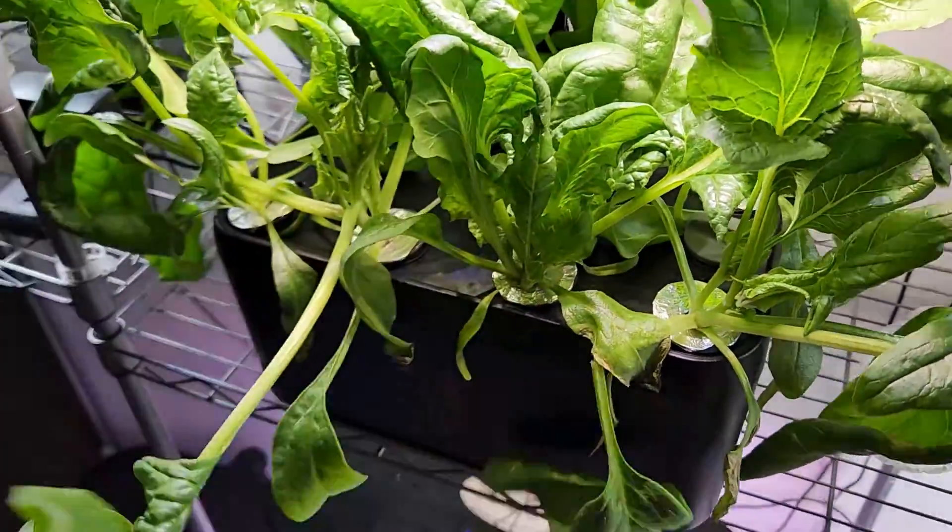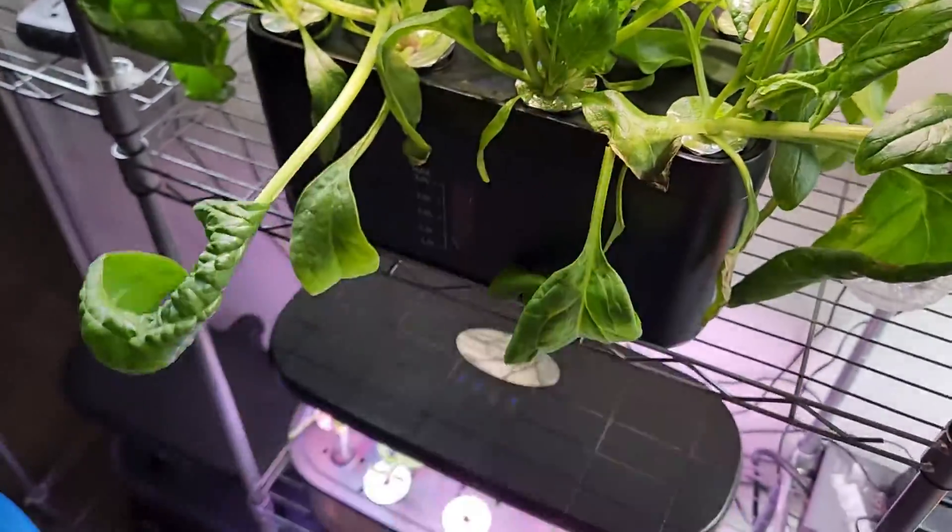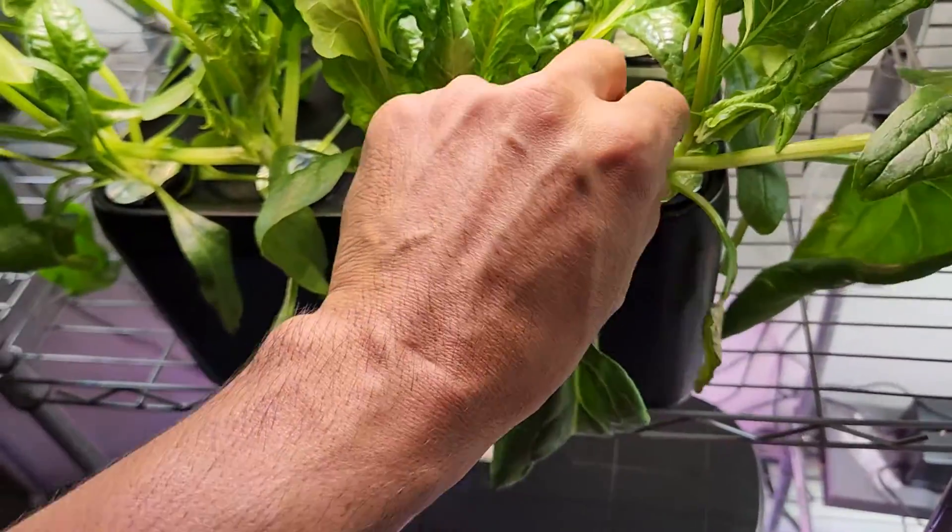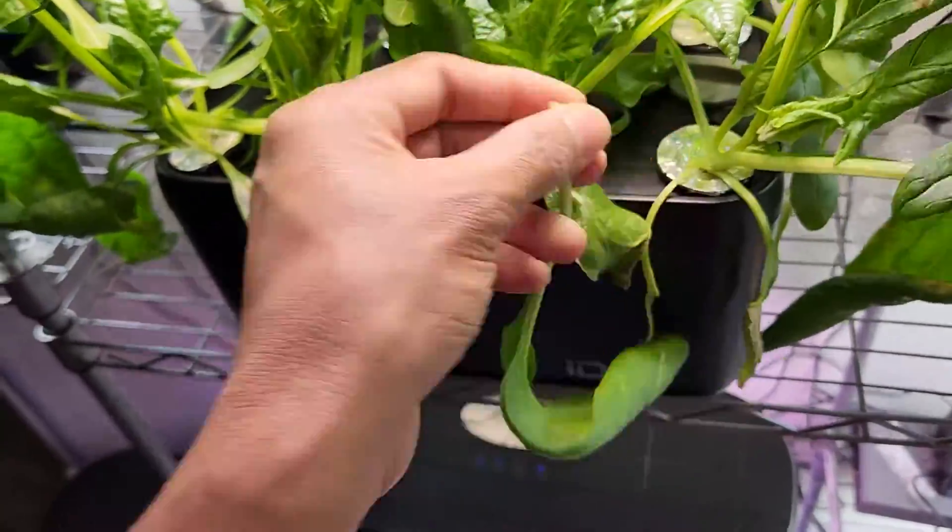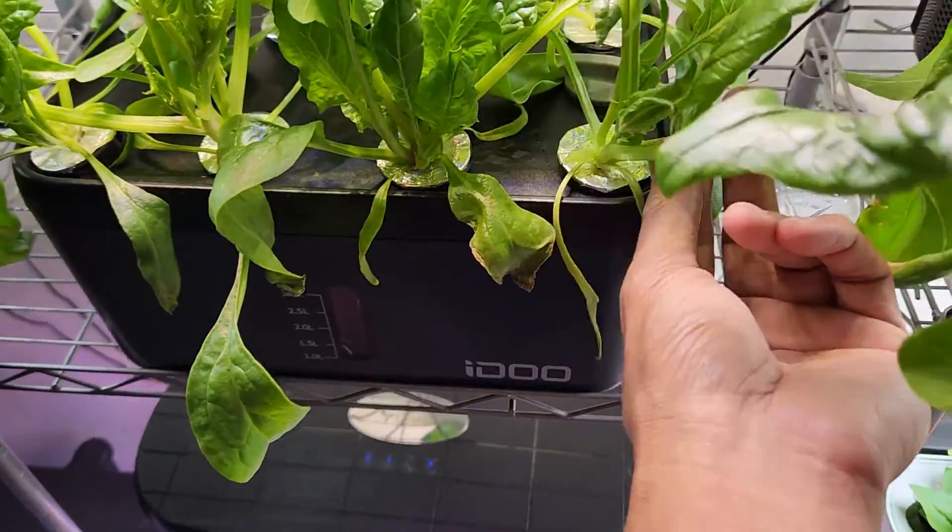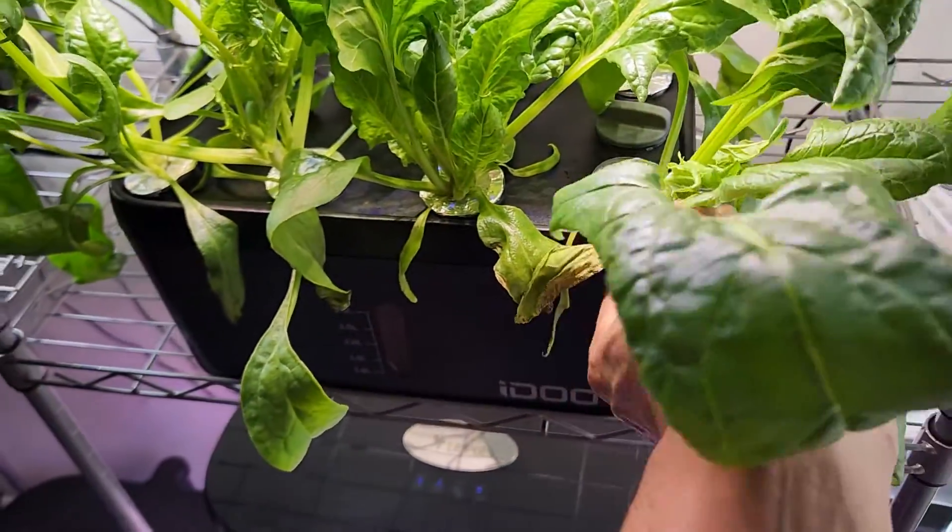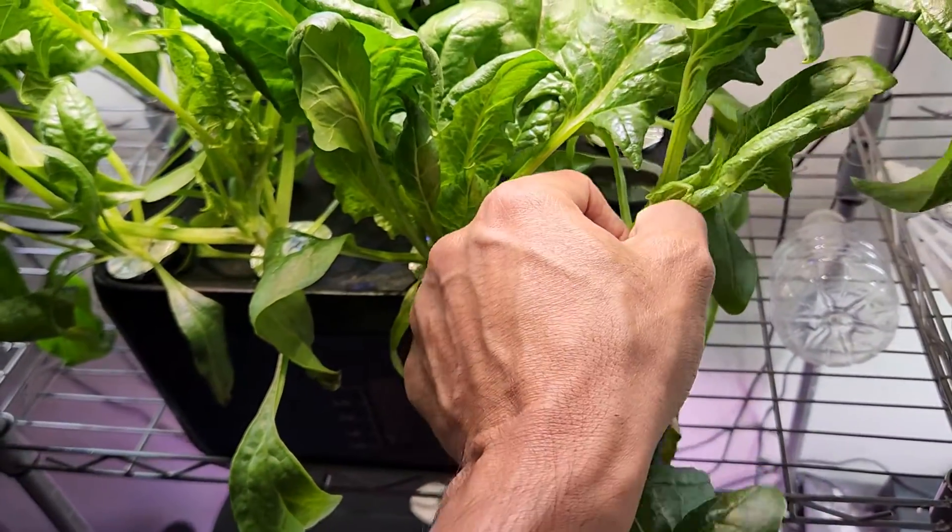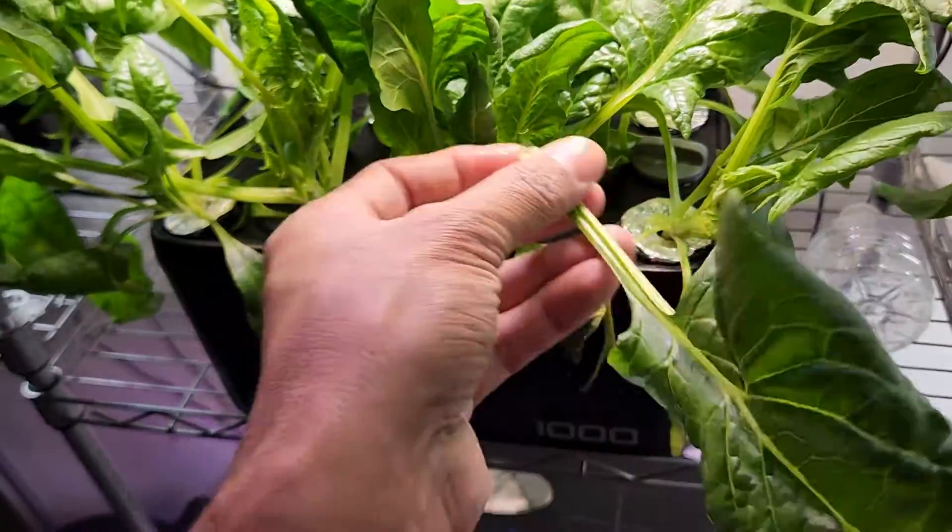By the way, I have been using MaxiGro Nutrition from the beginning. And I have been adding half a teaspoon of nutrition for every one liter of water. That is all the spinach needed. Nothing else. MaxiGro proven to be working very well for spinach from all my experiments I did so far.